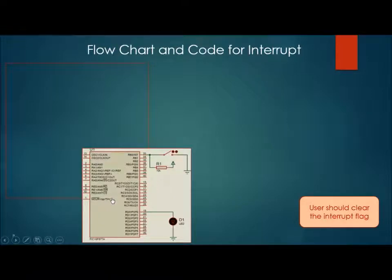Now we will write the code for it. To write the code we will follow a flow chart. Since a switch is attached to pin RB0 we need to make it input. For this TRISB register is used. TRISB0 equals 1 will set the bit RB0 hence it will become input pin.